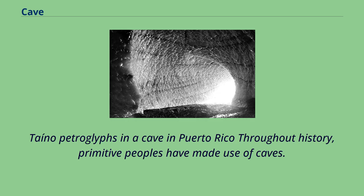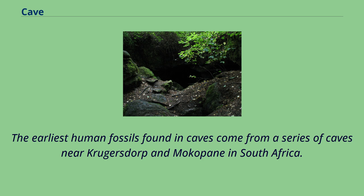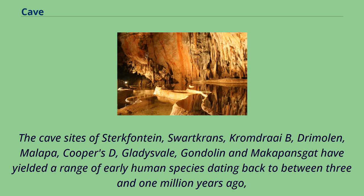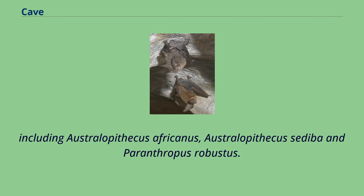Throughout history, primitive peoples have made use of caves. The earliest human fossils found in caves come from a series of caves near Krugersdorp and Mokopane in South Africa. The cave sites of Sterkfontein, Swartkrans, Kromdraai B, Drimolen, Malapa, Coopers, Gladysvale, Gondolin, and Makapansgat have yielded a range of early human species dating back to between 3 and 1 million years ago, including Australopithecus africanus, Australopithecus sediba, and Paranthropus robustus.